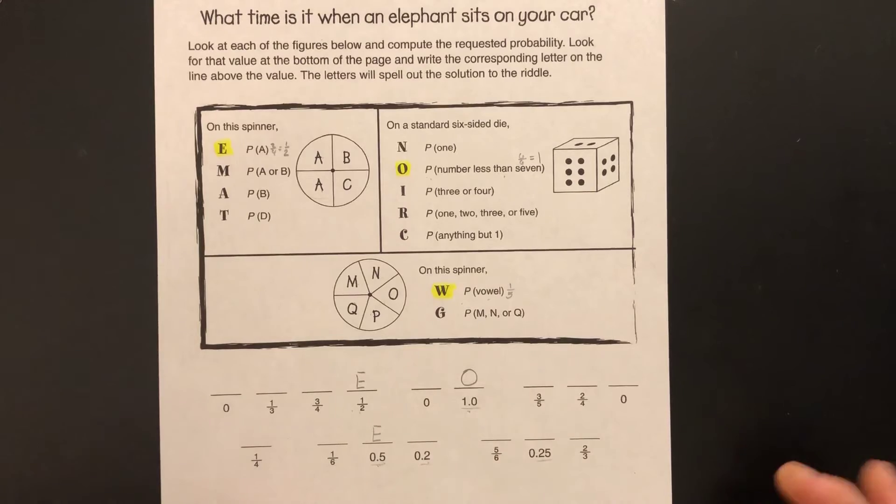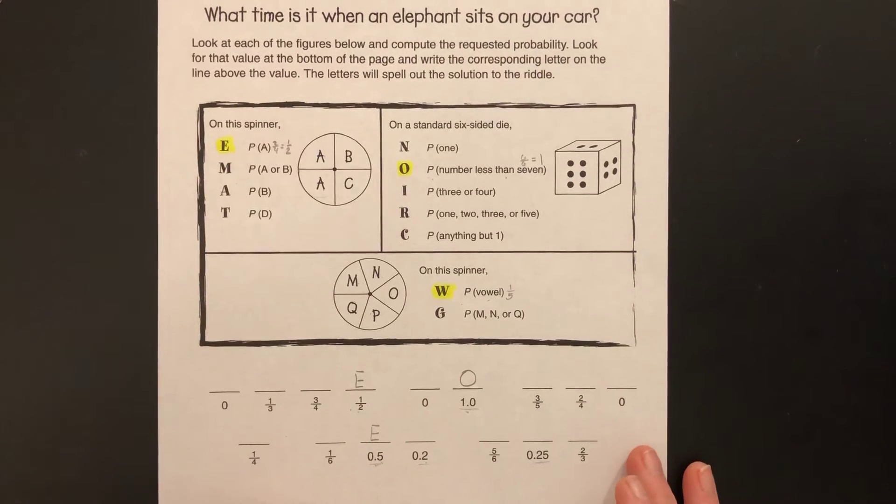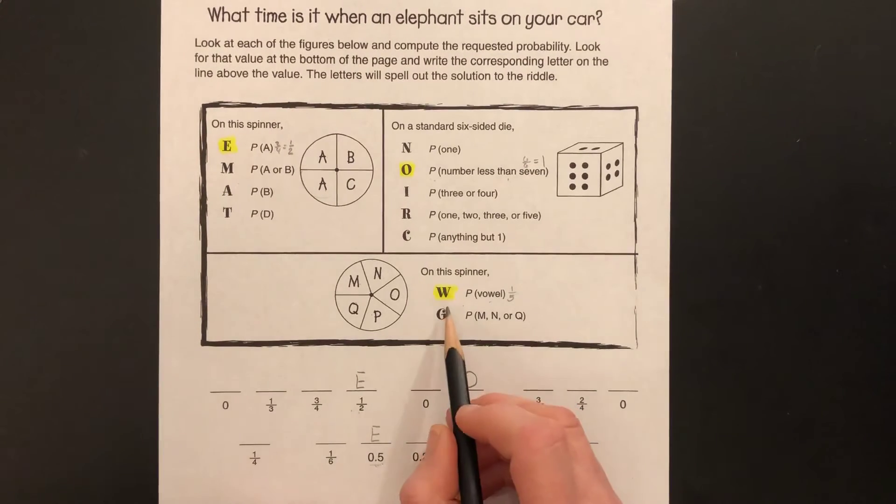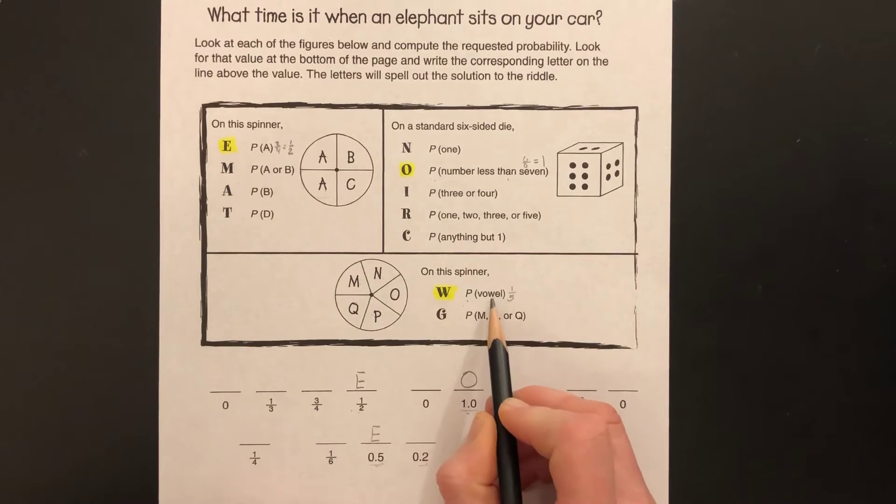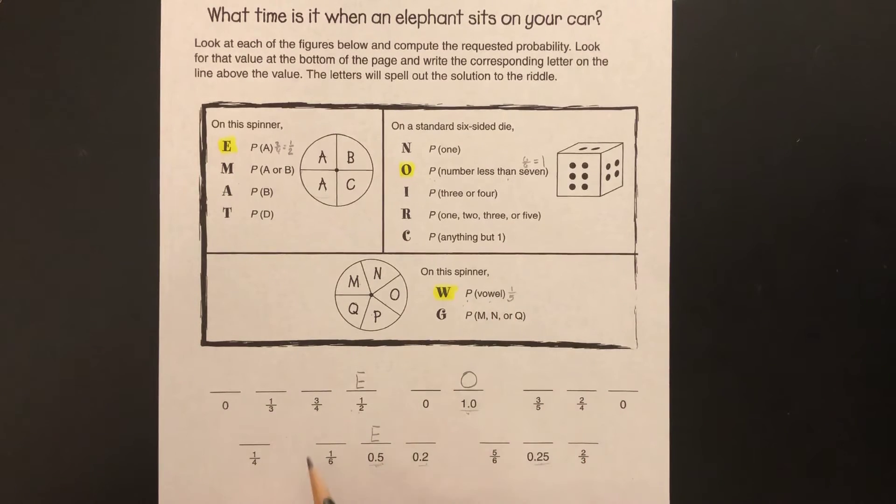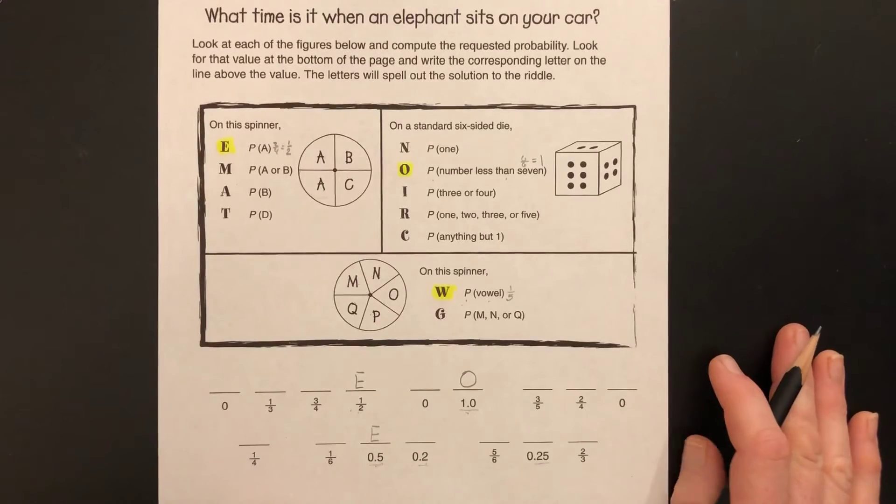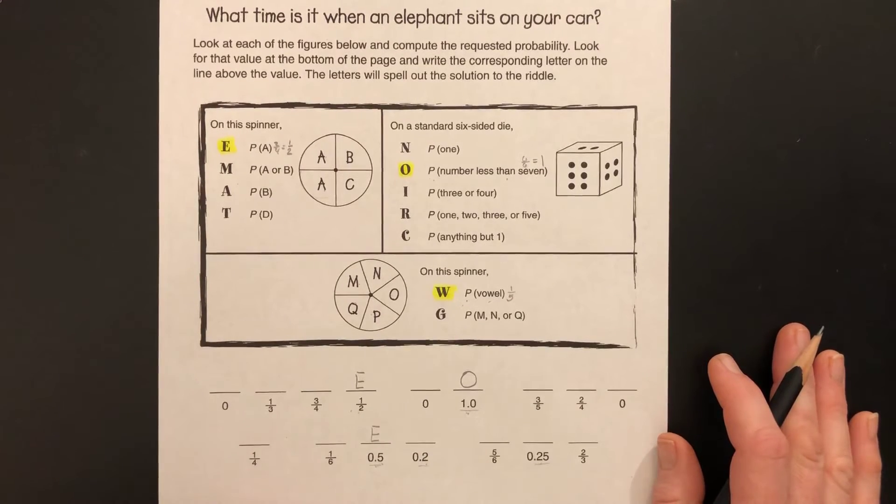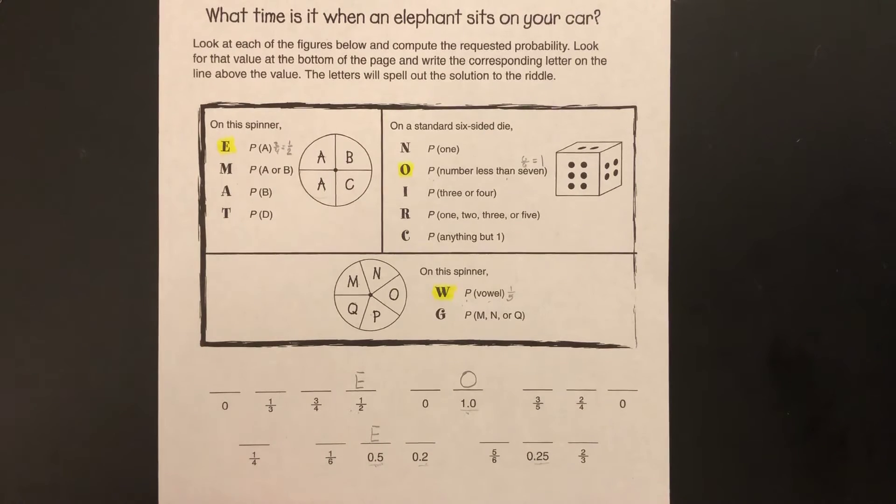All right, and then down at the bottom, the probability of landing on a vowel is one-fifth. I come down here, I don't have one-fifth. It's not there, must be in decimal form. See, we've got these two left. This one is two-tenths.